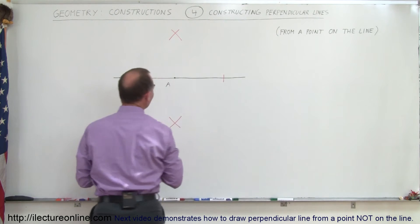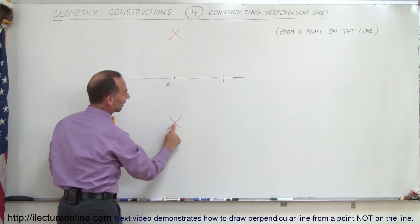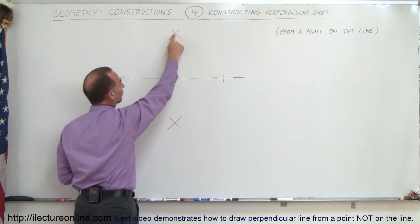Now that I've done that, I have three points: a point where those two lines cross, a point where those two lines cross, and point A.